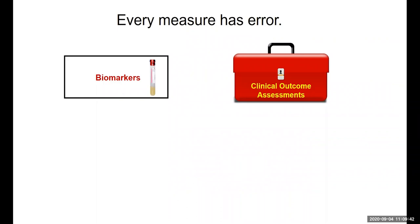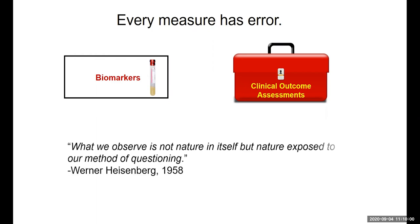Whether information about pain comes from a biomarker or a clinical outcome assessment, they all have some level of error associated with them. There is no perfect assessment of pain, regardless of the source. One quote I really like is from German physicist Dr. Werner Heisenberg, who said: what we observe is not nature itself, but nature exposed to our method of questioning. This reminds us that we're applying a set of tools to try to capture the pain experience, and all these tools have some type of error. Our goal as methodologists and researchers is to try to reduce the error or noise around those pain assessments.